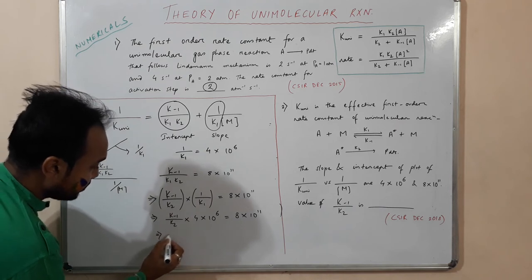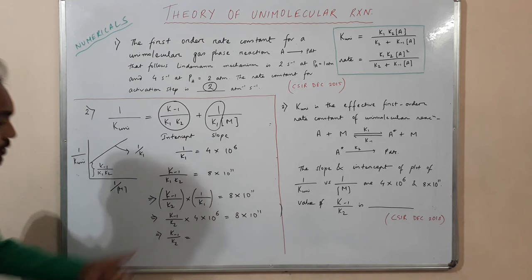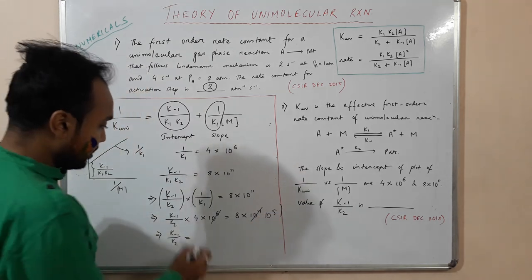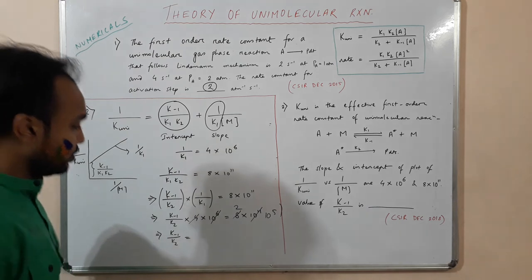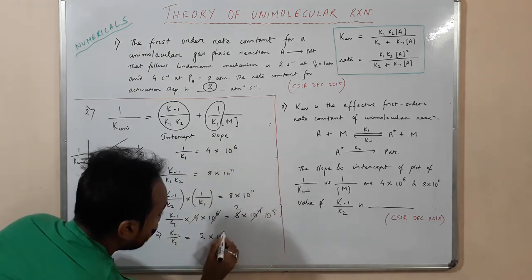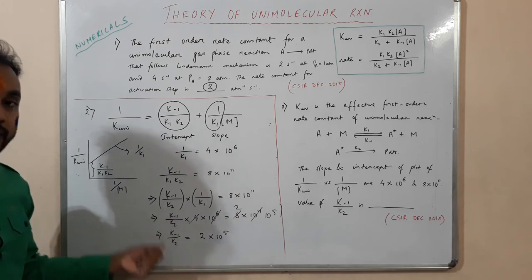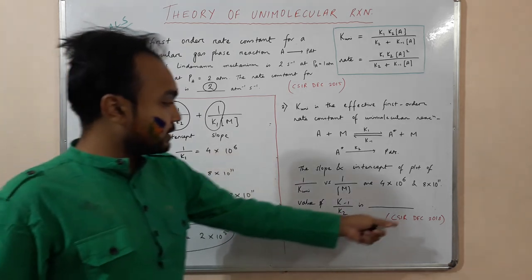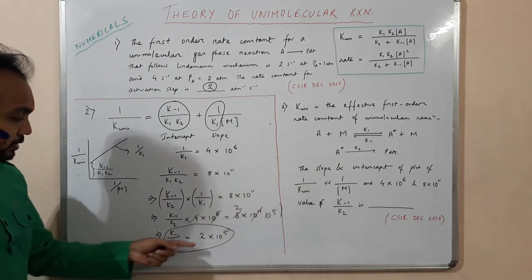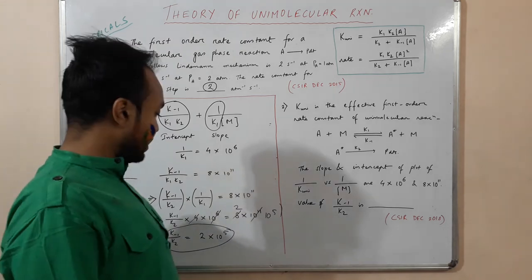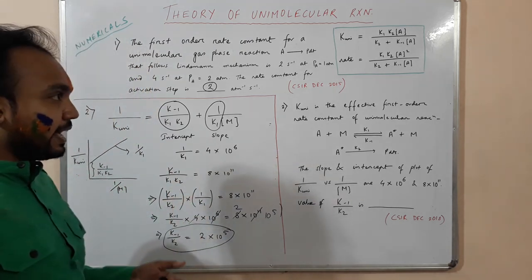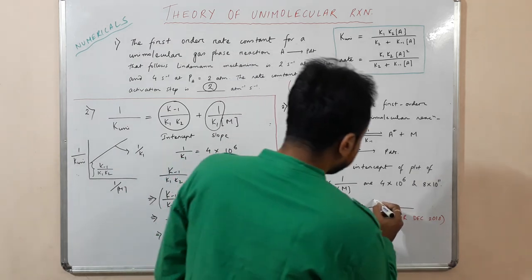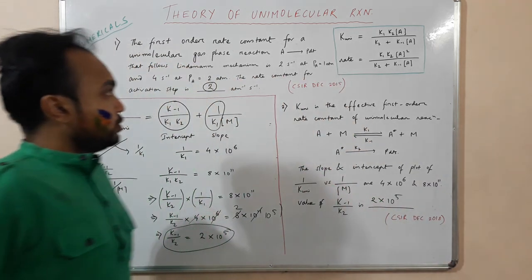So K₋₁/K₂ × 4×10⁶ = 8×10¹¹. Therefore K₋₁/K₂ = 8×10¹¹ / 4×10⁶ = 2×10⁵. The value of K₋₁/K₂ is 2×10⁵. This question was asked in CSIR NET December 2018, and the correct answer is option A (question number 190 from set A). It was a four-mark question.